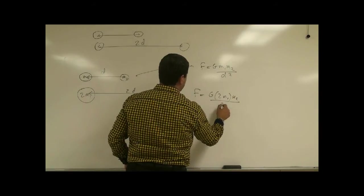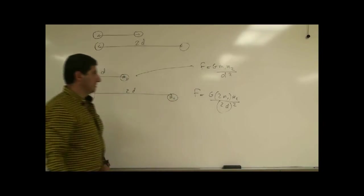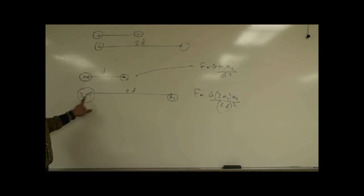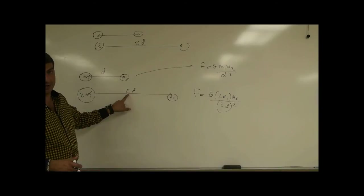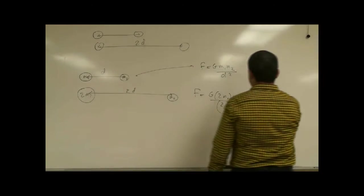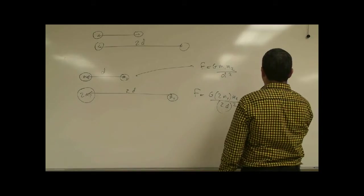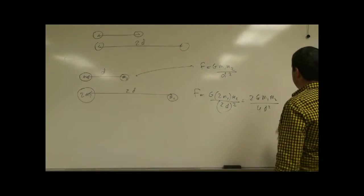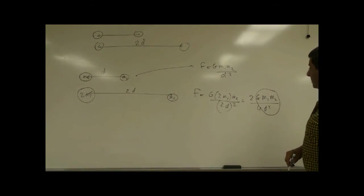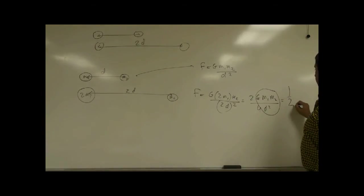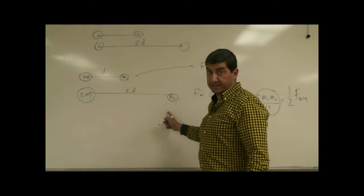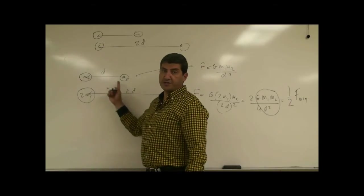G 2M1 M2 over 2D quantity squared. You see, this two has a different role than this two. This two is just doubled. You're not squaring that one. This one, you've got to square it, the distance. So what's going to happen there? 2 G M1 M2 over 4D squared. This one, G M1 M2 over D squared is equal to their original force. So it's going to be one-half of the original force. So the force between these two planets is half the force of these planets.